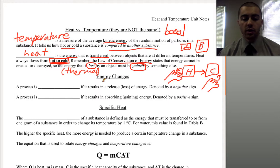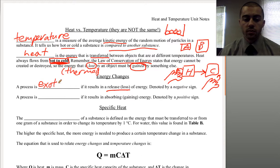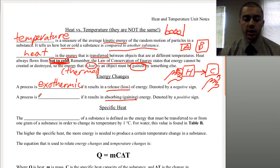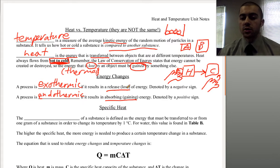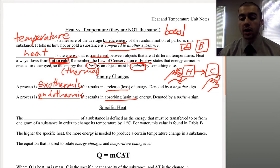The next thing we're going to talk about is two types of energy changes: exothermic and endothermic. If we have a release or a loss of energy, that's called exothermic. If we have a gain or an absorption of energy, that's called endothermic. So, the change for our hand when we're gaining heat from a hot object would be an endothermic change, and with a cold object it would be exothermic for our hand because our hand is giving off energy.